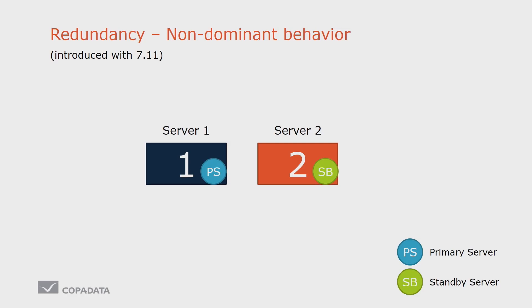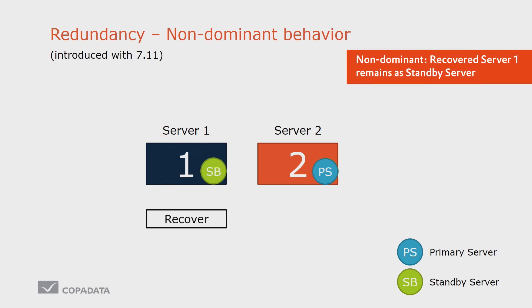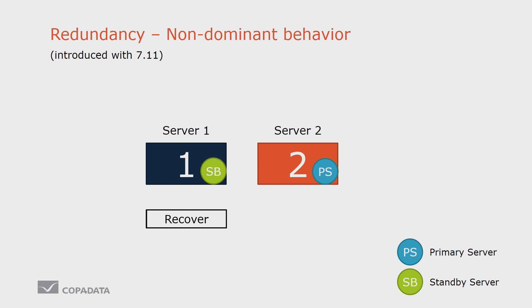With version 7.11 we introduced two new modes, two new ways of redundancy. The first is the non-dominant redundancy. If the primary server fails, standby will take over again. But now if server one comes back online and is recovered, the former primary server one will become the standby and will stay in standby mode — until server two will fail in that case. The advantage here is reducing switchover times, because all the clients and everything has to synchronize, so you're reducing switchover times.